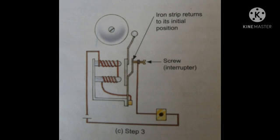The soft iron strip returns to its initial position, touching the screw that is known as the interrupter. This results in the circuit being completed and current flows again.